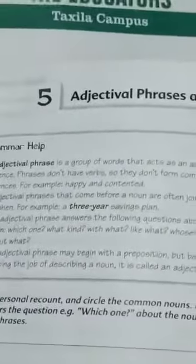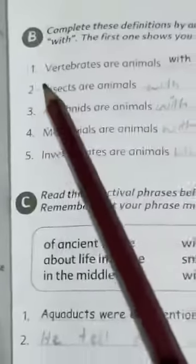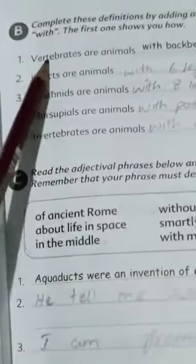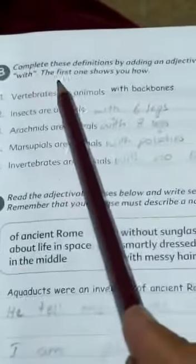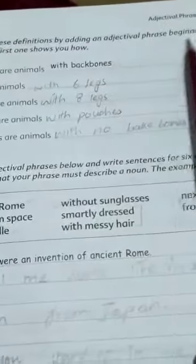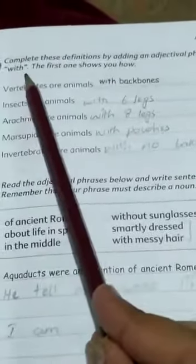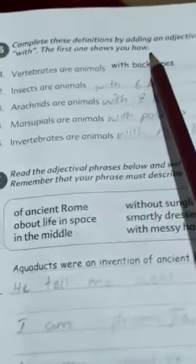So, I hope ke aap ko clear ho gaya hoga ke adjectival phrase kya hota hai. So, abhi hum is ke liye aap ek example dekhenge. Yahan par aap ke paas book mein ek example hai. On page 21 of your grammar book. Complete this definition by adding an adjectival phrase beginning with 'with'. The first one shows you how.